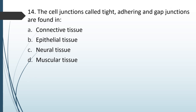The cell junctions called tight, adhering and gap junctions are found in: (A) connective tissue; (B) epithelial tissue; (C) neural tissue; (D) muscular tissue. The correct answer is option B — epithelial tissue.